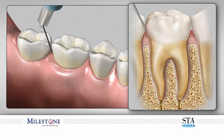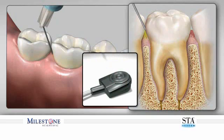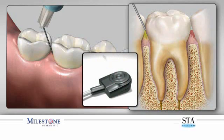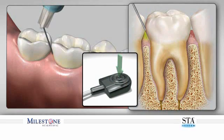While holding the handpiece with a pen-like grasp, approach the tooth at about 45 degrees with the bevel towards the tooth. Place the needle very slowly into the gingival sulcus, as if it were a periodontal probe, while simultaneously initiating the control flow rate.